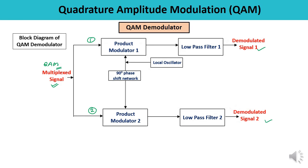The QAM signal is forwarded from the upper channel and the lower channel of the receiver. The upper channel consists of a product modulator and the local oscillator. The lower channel also consists of product modulator two and the carrier which is 90-degree phase shifted. The resultant signals of the product modulators are then passed through low pass filter one and low pass filter two. The low pass filter passes low frequency components and blocks or attenuates the high frequency components.